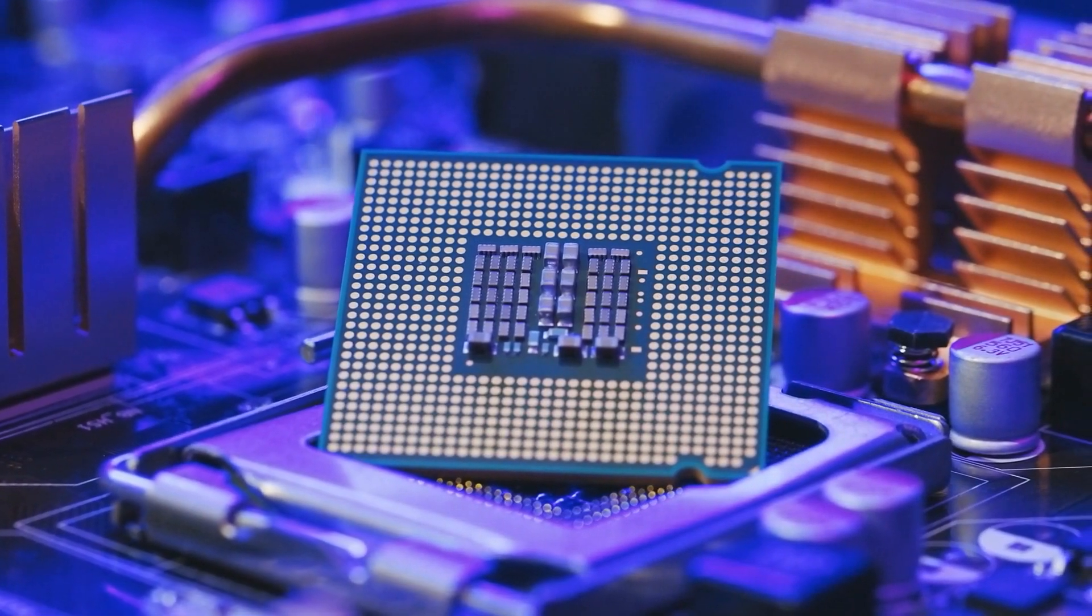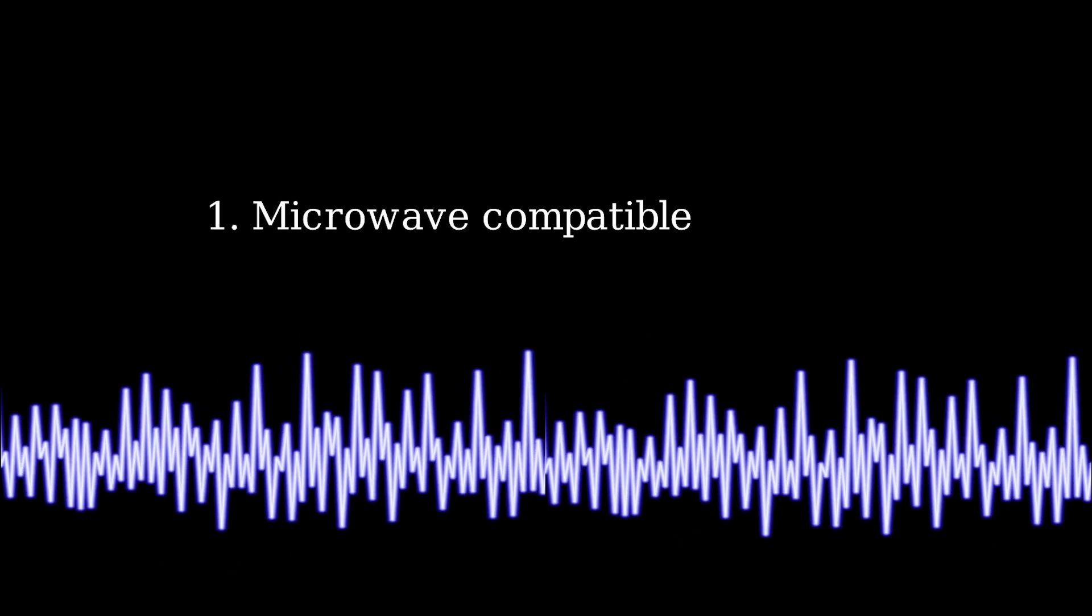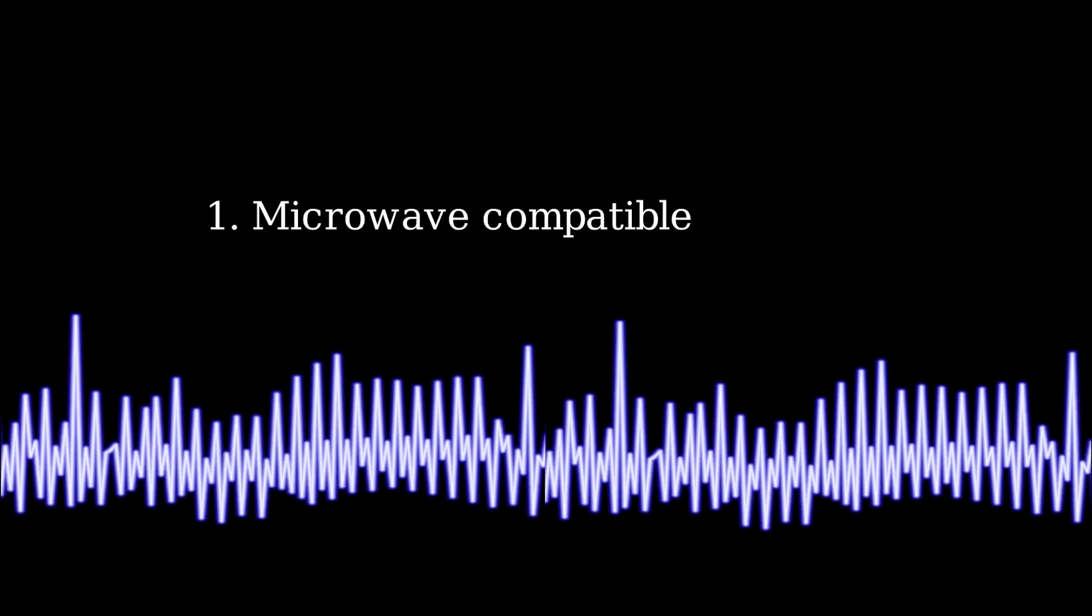Thus, all of our cables need to be three things. First, they need to be microwave compatible. This means that they need to be able to send and receive signals to our qubits in that 4 to 8 gigahertz range.